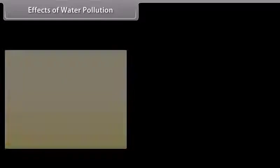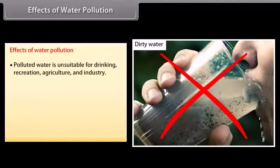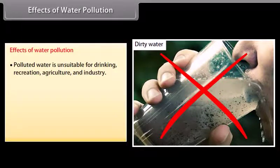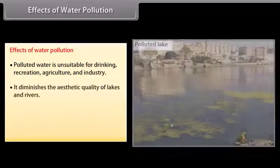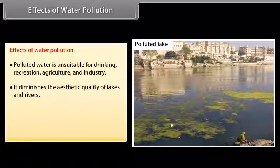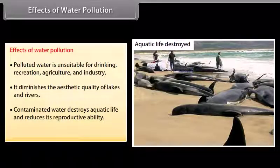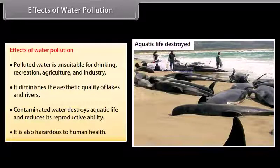Effects of water pollution. Polluted water is unsuitable for drinking, recreation, agriculture and industry. It diminishes the aesthetic quality of lakes and rivers. Contaminated water destroys aquatic life and reduces its reproductive ability. It is also hazardous to human health.